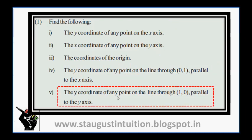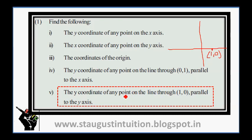Similarly, the x-coordinates of any point on the line through (1,0) parallel to the y-axis. This is the y-axis and this is the x-axis. The point is (1,0), and the line is parallel to the y-axis. The answer is 1.